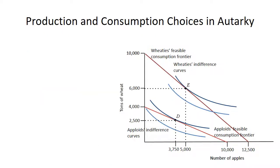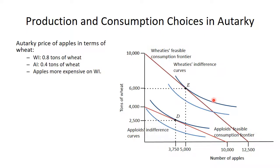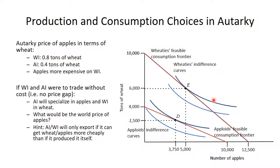Now let's put the feasible frontiers and indifference curves on the same graph, overlaying the two diagrams from before. This makes it easier to think about what happens with both on the same graph — no difference in the analysis, we've just overlaid things.